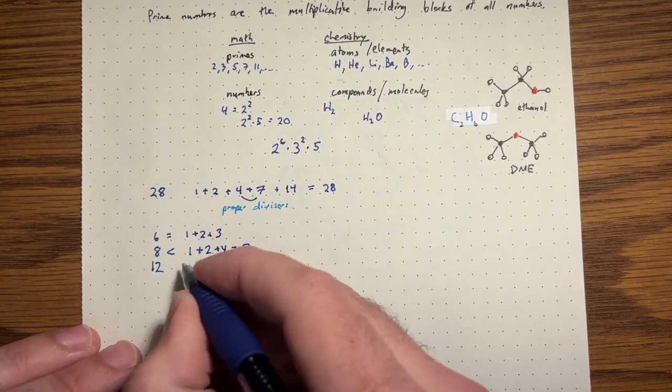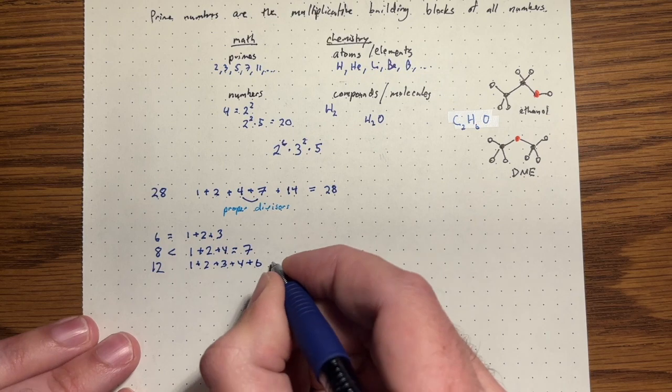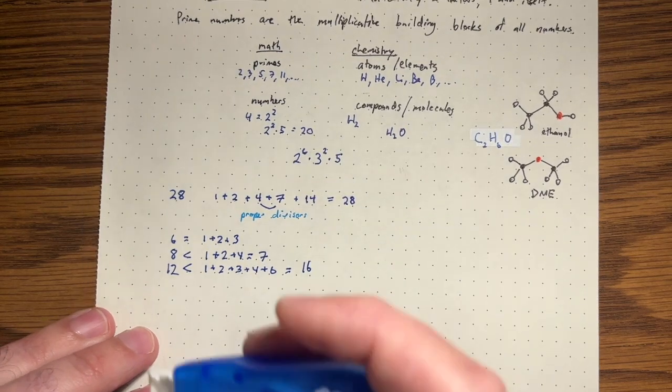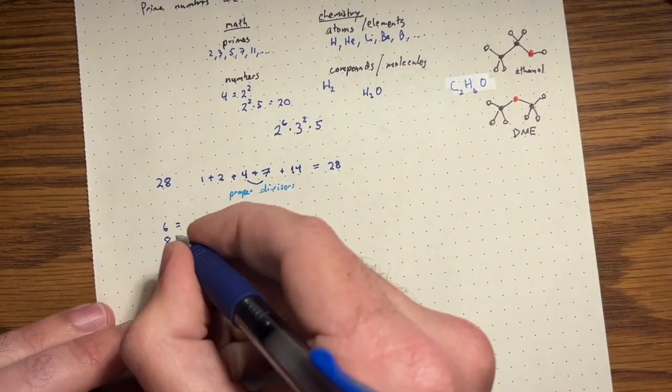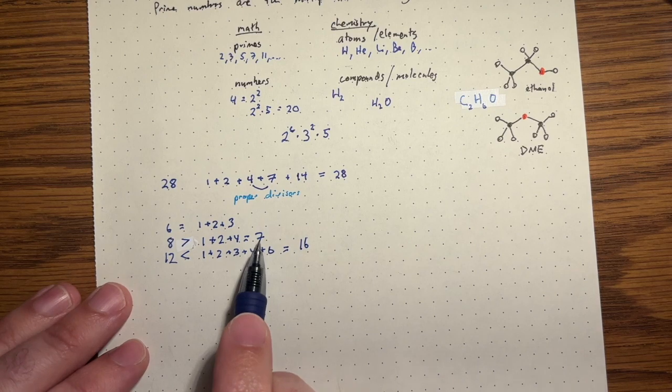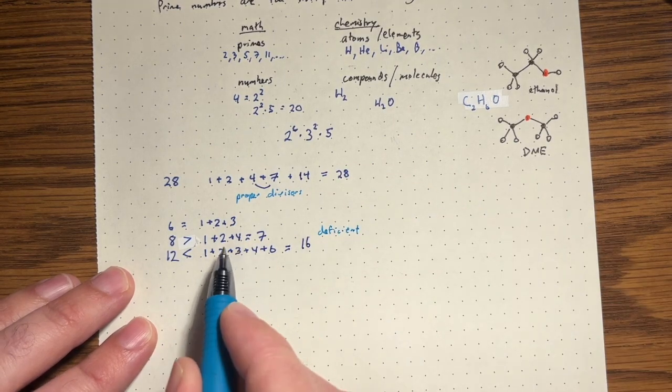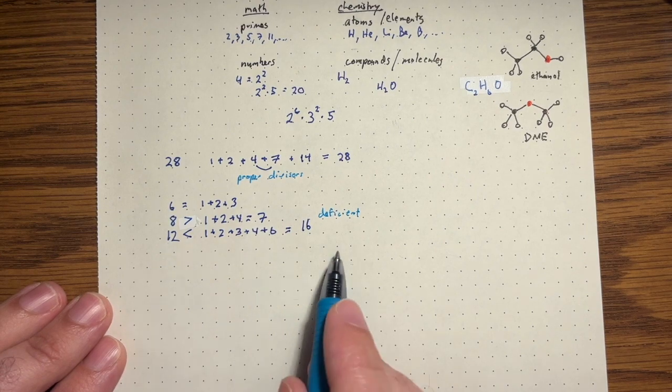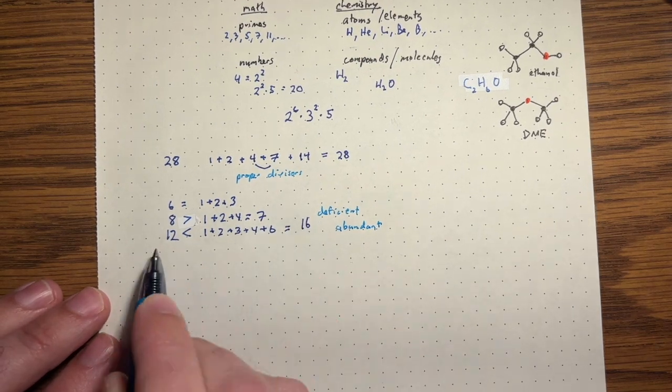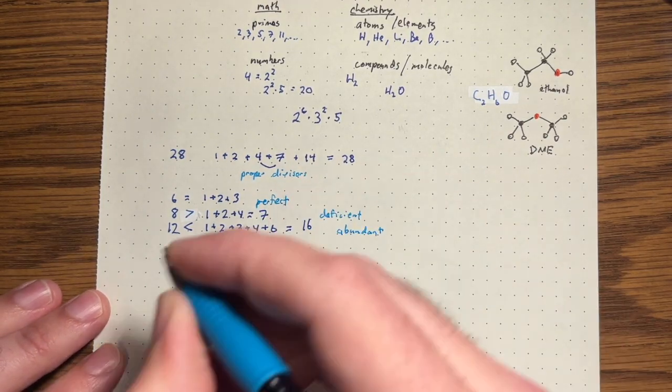Sorry, I did this the wrong way, didn't I? So eight is smaller. Or eight is larger than that sum. The sum is only seven. You call numbers like this deficient. Divisors add up to less than a number. And you call numbers like this, like 12, abundant because the divisors sum up to something greater than the number itself. Six is an example of a perfect number. And 28 is also a perfect number.